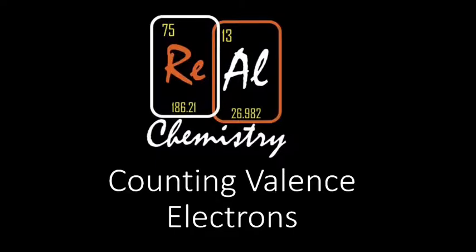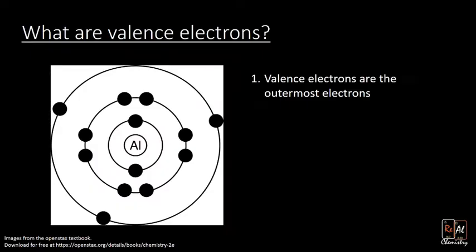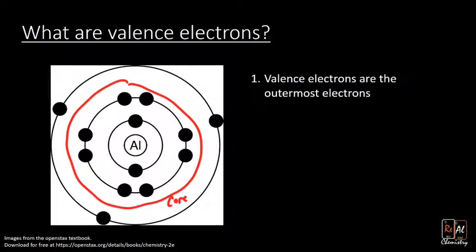So first, what are valence electrons? Well, valence electrons are just the outermost electrons. So here I have a representation of aluminum. And aluminum has all these electrons around it, which are shown as those black circles. All of these electrons are what we call core electrons. Meanwhile, those outermost electrons, this one, this one, and this one, are all called valence electrons. So it just means on the outside, right? And those are really important.